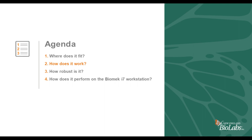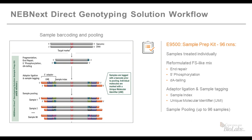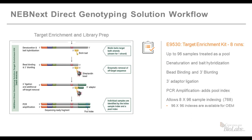We'll go into deep detail in a minute. The NEBnext Direct Genotyping Solution workflow discriminates between two parts. The first part is the sample barcoding and pooling strategy, where each sample is processed individually and then pooled. Downstream steps involve denaturation, hybridization for target enrichment of the region of interest, and then library building. From the target enrichment step onward, we are working with pools containing up to 96 samples.